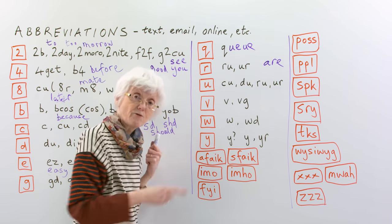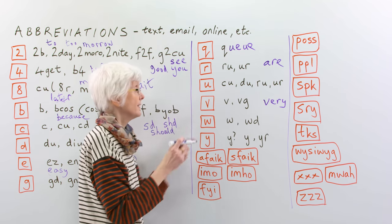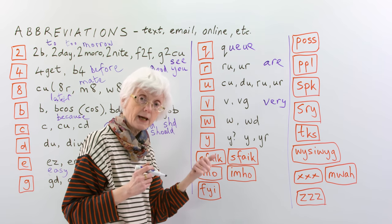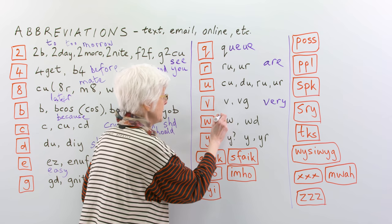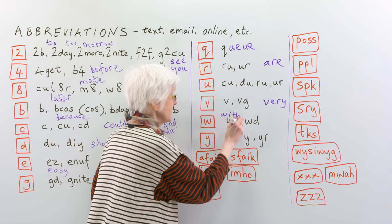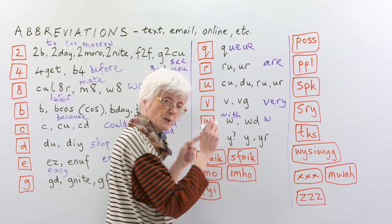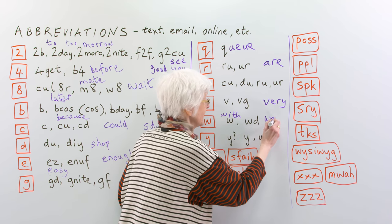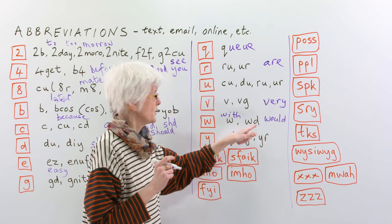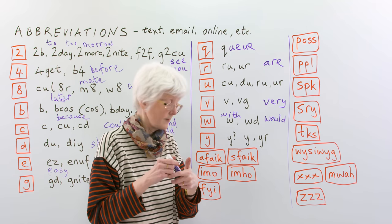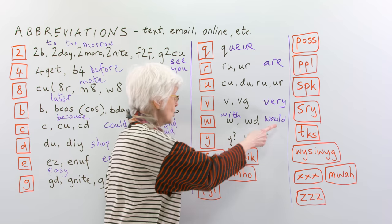V means very, very. So, V, and then VG, very good. Then W, that can mean with, with, or, yes, it can mean with, and then WD, like the other ones we had here, could and should, WD means would. So, one W, with, WD, would.